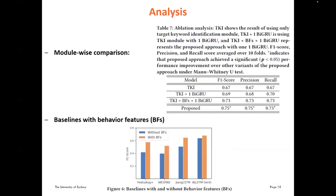In module-wise analysis, we added each module incrementally to our base model and found that performance increases each time a new module is added. This confirms that the strength of HMCnet lies in combining target keyword identification with behavior features. We also found that adding behavior features to the baselines improves their performance as well, concluding that capturing behavior features is very important for the health mention classification task.